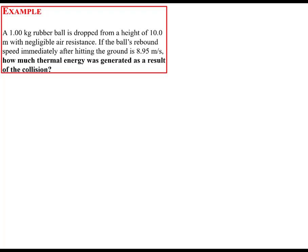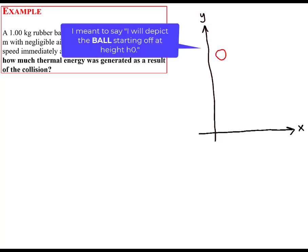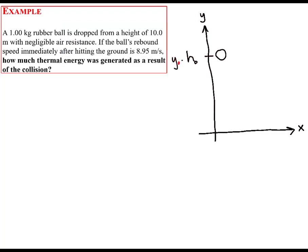Let's start off with a picture. I'll depict the ground as a horizontal line, which will also be where I place my x-axis. The ball is falling from a particular height, so I will make my y-axis perpendicular to the ground. The ball starts at height h-naught, defined as 10.0 meters. The ball's mass is given as 1.00 kilograms.